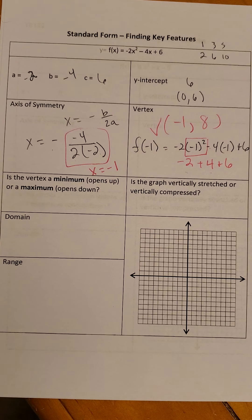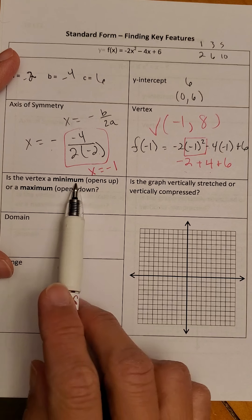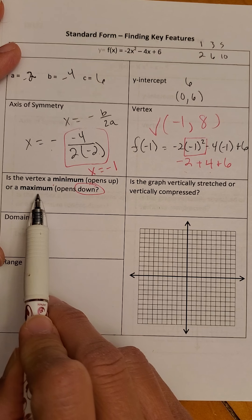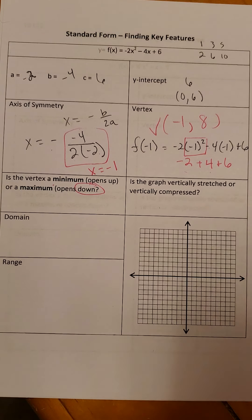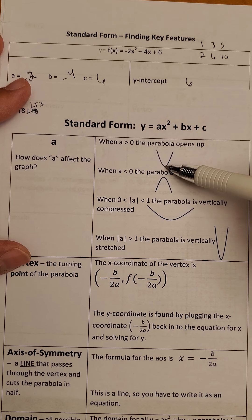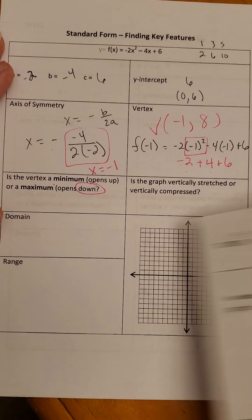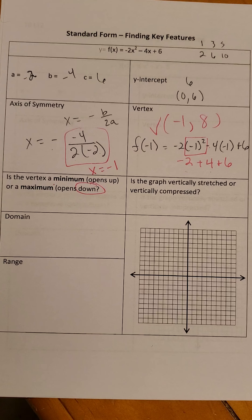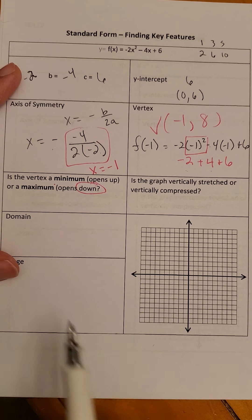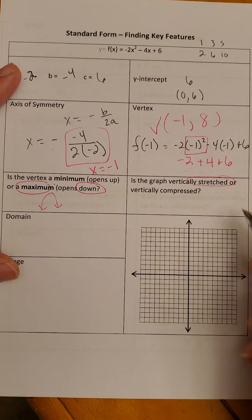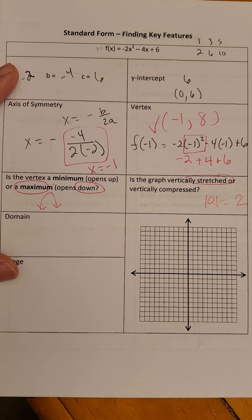Now I'm ready to graph using the vertex and my pattern. Does it open up or down? Because of that negative, we know it opens down. I want to talk about minimum and maximum: when a parabola opens up it has a low point called the minimum; when it opens down it has a maximum — the highest point. Especially in word problems, whenever you see 'maximize' or 'minimize,' they're talking about the vertex. This parabola has a maximum because it opens down. Is it vertically stretched or compressed? The absolute value of A is 2, which is bigger than 1, so it's vertically stretched. The domain is all real numbers.